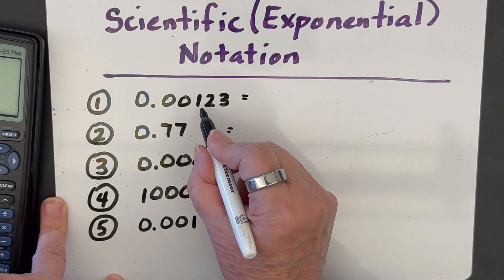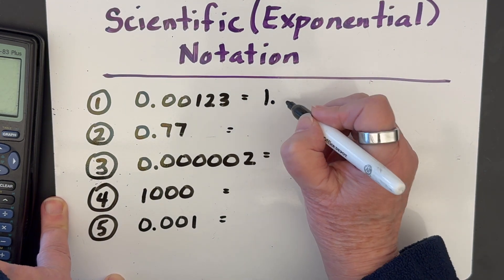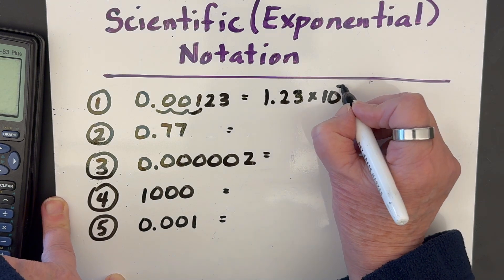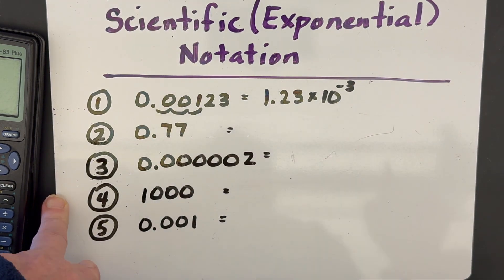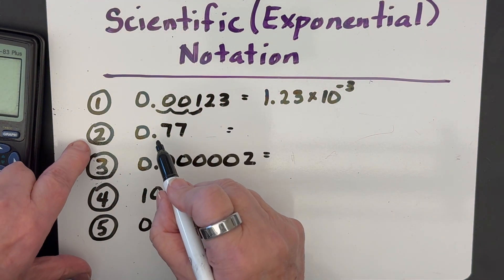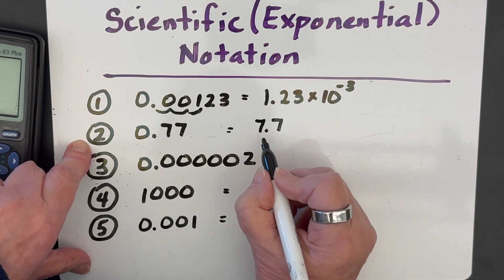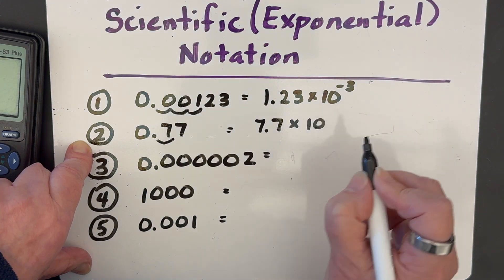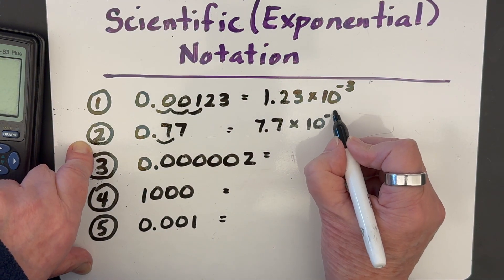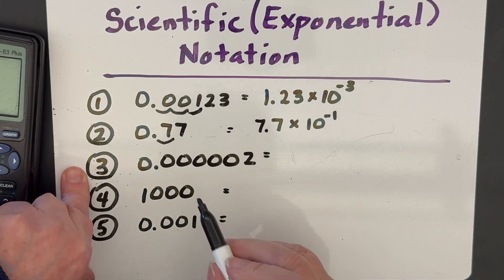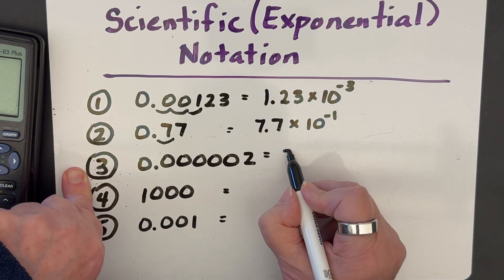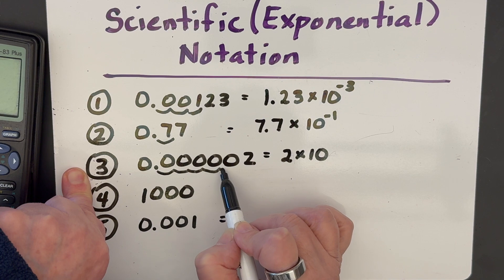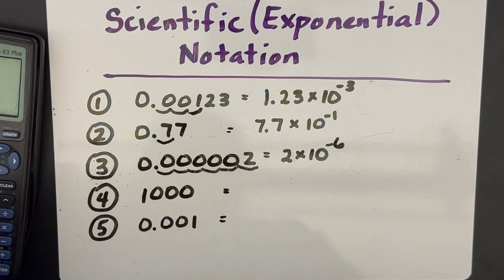For the first small-number example, we want the decimal between the first two non-zero digits: 1.23. We moved it one, two, three places, so it's times ten to the negative three because it's a small number and we moved the decimal to the right. Next, we move it one spot to get 7.7 — just one digit to the left — so it's times ten to the negative one, a small number less than one. The next one requires moving quite far to reach the only non-zero digit, which is 2. We move it one, two, three, four, five, six places, so it's 2 times ten to the negative six.